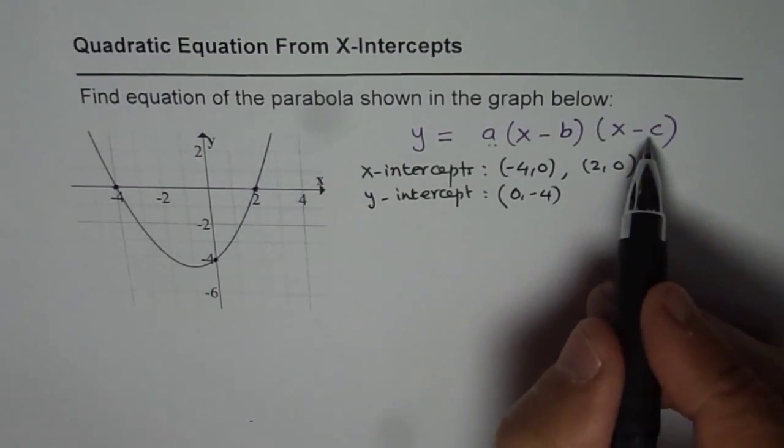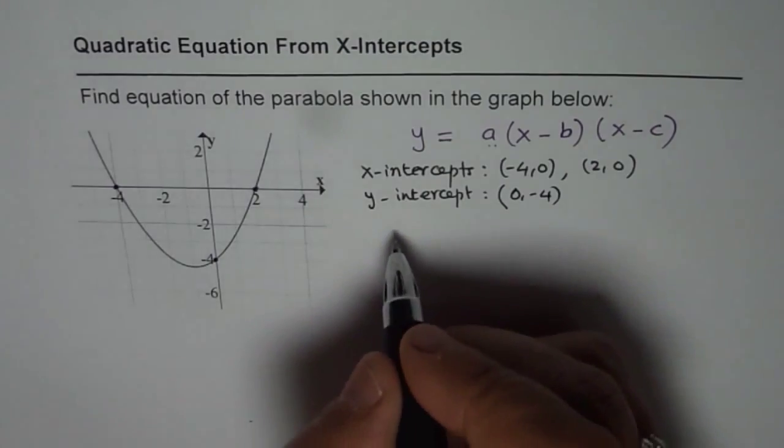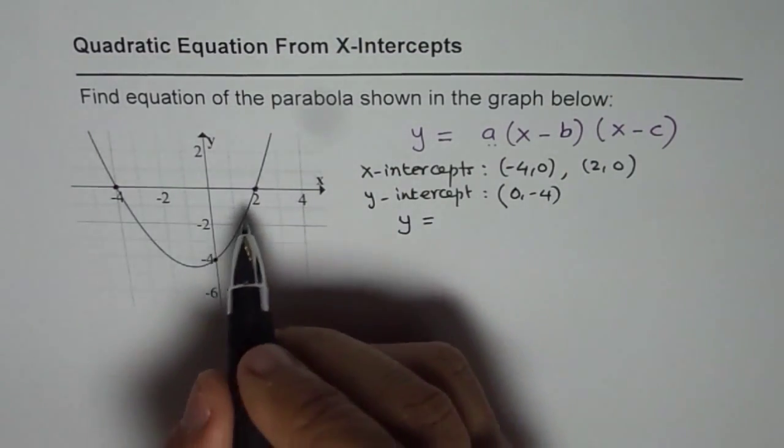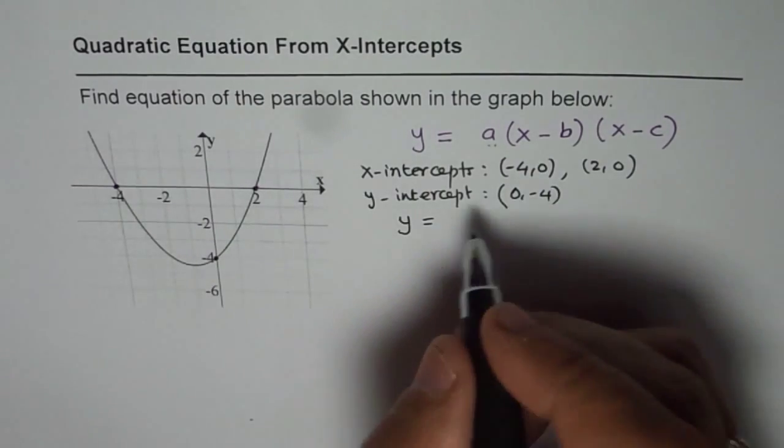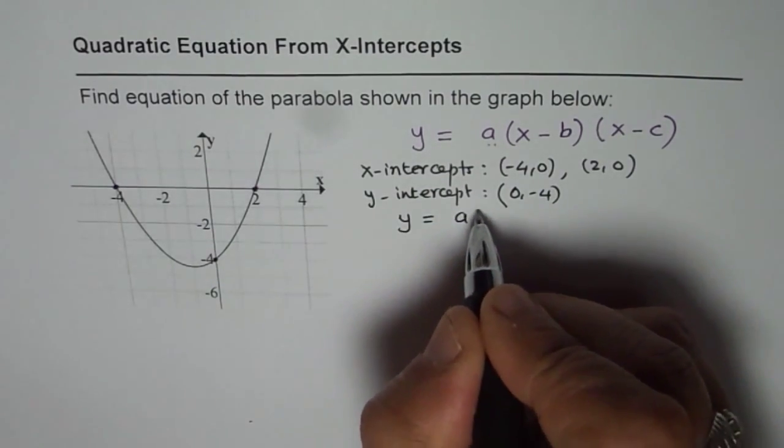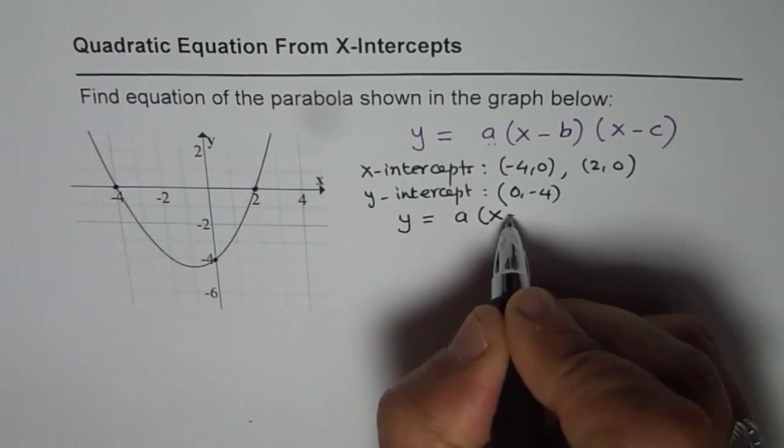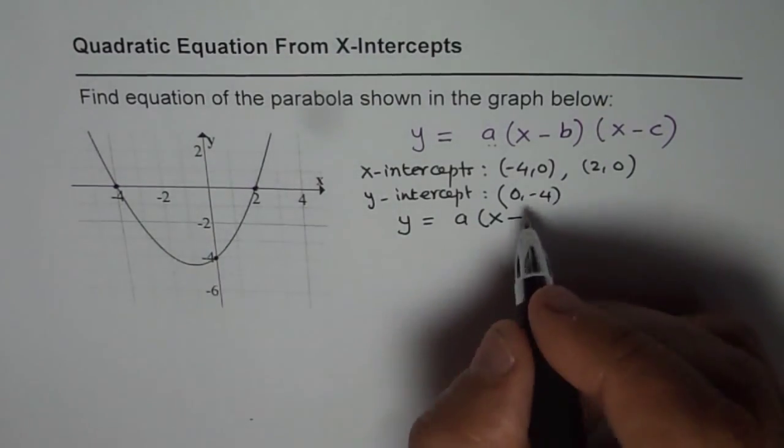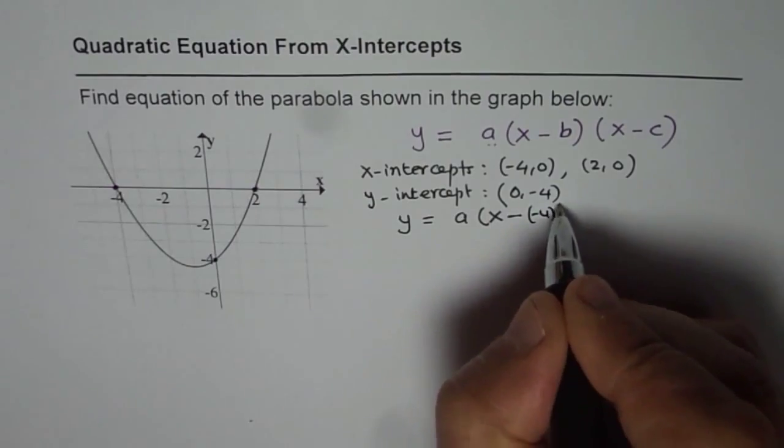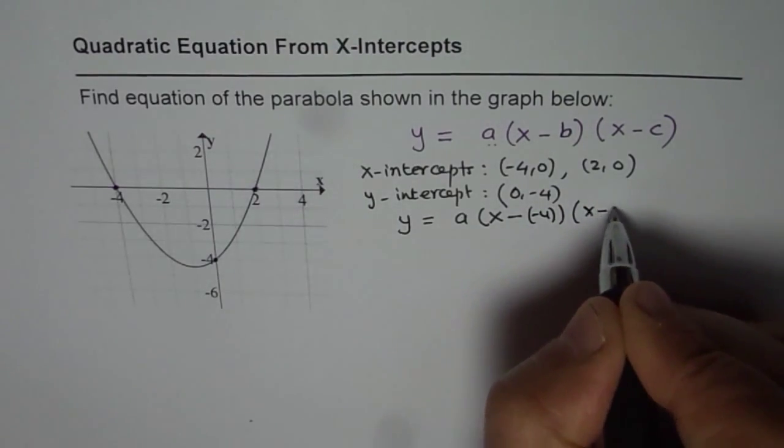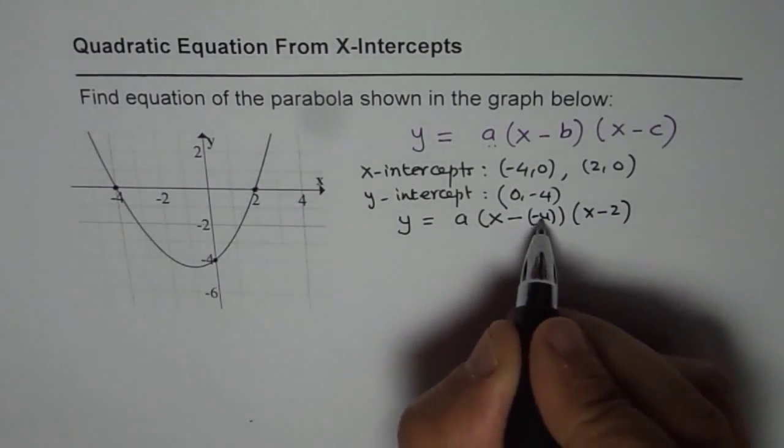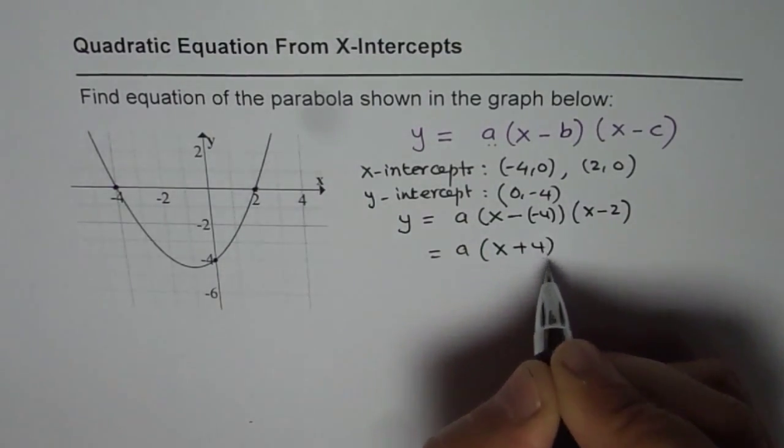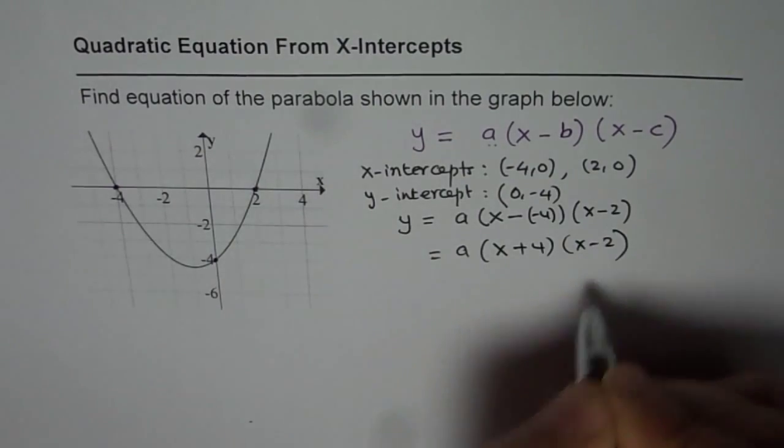Now we will substitute these values and find the equation. So the general equation for a family of parabola with just these two x-intercepts could be written as a times x minus minus 4 times x minus 2, which is a times x plus 4 times x minus 2.